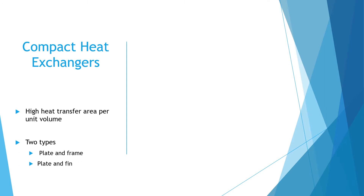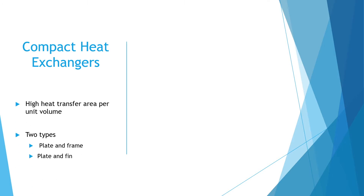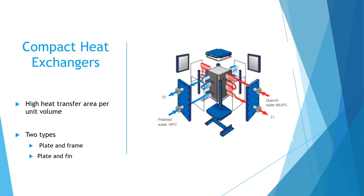Compact heat exchangers are devices with high heat transfer area per volume. There are two types: plate and frame, where stacked plates are bonded together and the fluid is spread out over multiple plates; and plate fin, where the fins are inserted between parallel plates. The fluid flows between the fins, which can be triangular, rectangular, wavy, or perforated.